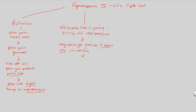After meiosis produces 4 haploid cells, one of those 4 cells actually survives to become the megaspore. We have 4 develop as a safety net so that at least one cell survives to become that ever-famous megaspore. Because we're in the megasporangium, the megasporocyte produces a megaspore, but only one of the 4 created by meiosis becomes the important megaspore.